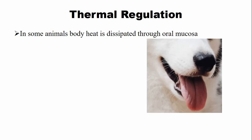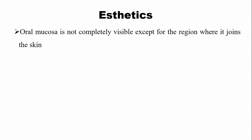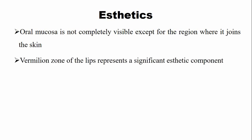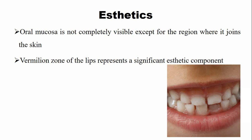Dogs during the hot summers have their tongue outside, and basically they release heat from their tongue. Oral mucosa is not completely visible except for a region where it joins the skin and some part of the gingiva. The vermilion zone of the lip represents a significant aesthetic component together with the gingiva, further enhancing the beauty of the face, so the oral mucosa has an aesthetic function as well.